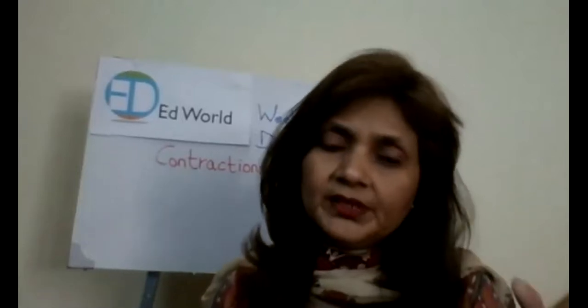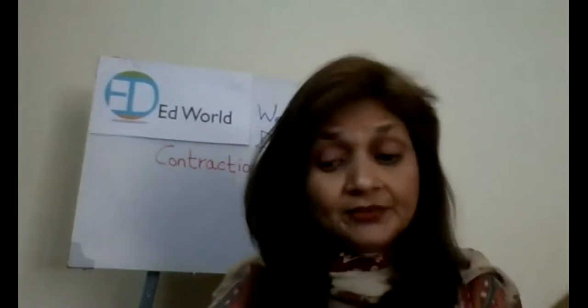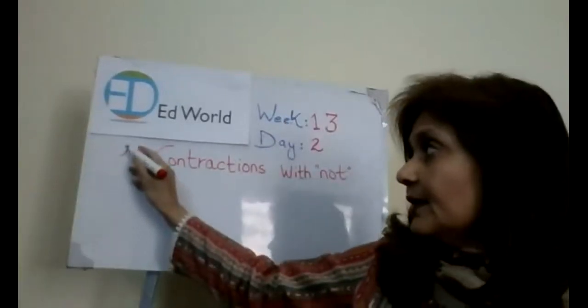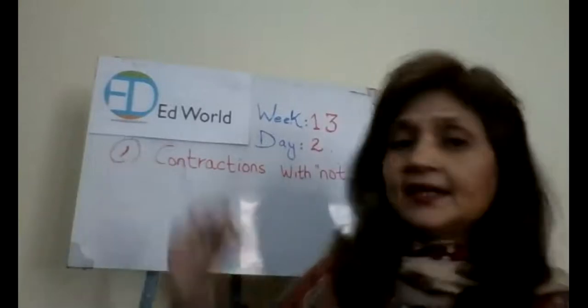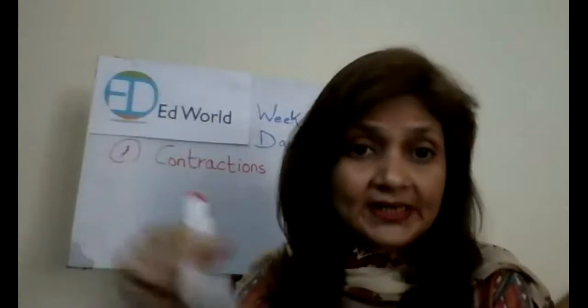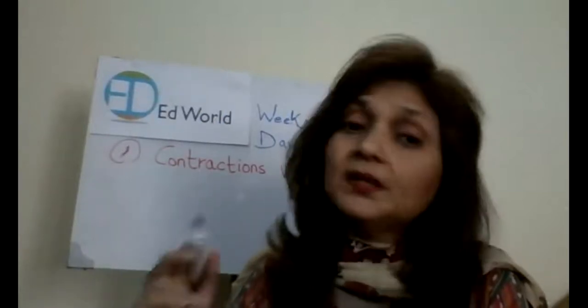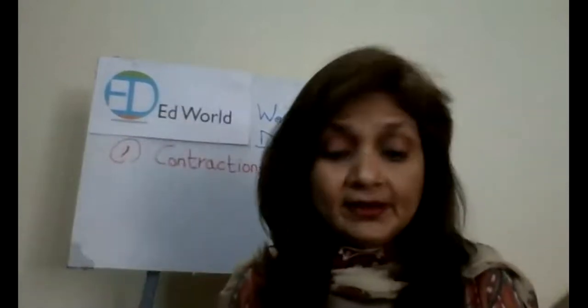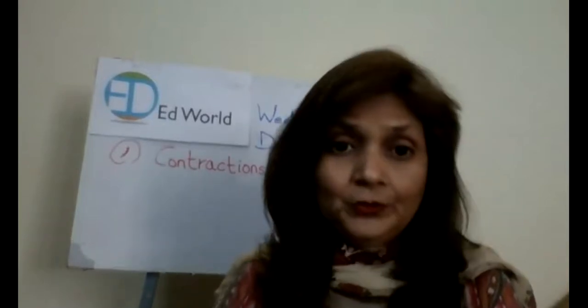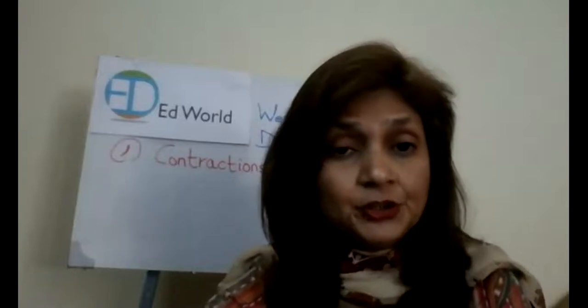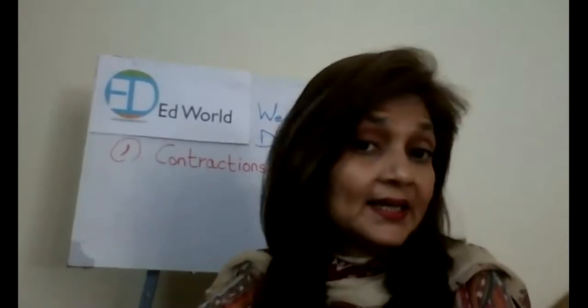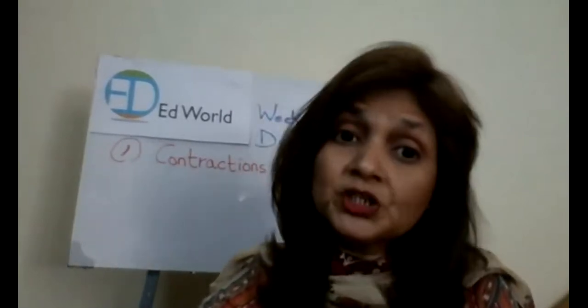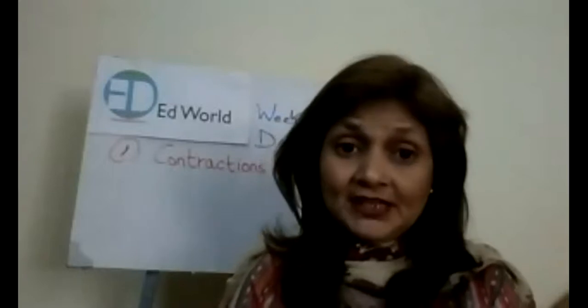Contractions are when you make a word smaller by leaving out some of the alphabets — either one or two — to make the word smaller. And what do you add when you are writing a contraction? You add an apostrophe. This is the apostrophe and it is like a comma, but you write it on the top. The comma you write at the bottom, but the apostrophe you write on top. And there are certain rules that you have to follow. So let's look at the video we have on contractions. This is our Edworld video — do watch it later, subscribe and like the video so it's saved for you.